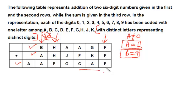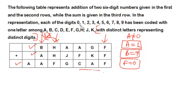Looking at the units column: F plus F gives a result whose unit digit is F. This is only possible when F equals zero, because zero plus zero equals zero. For any other digit, the addition of the same digit does not end with that digit itself. So we can say straight away that the value of F is zero.